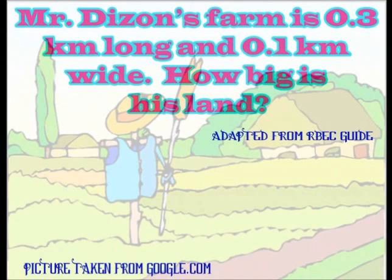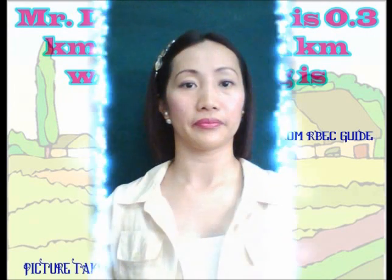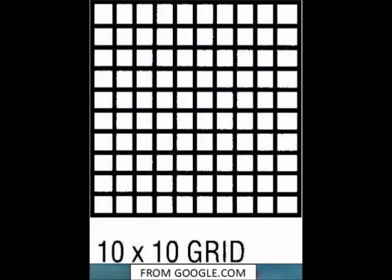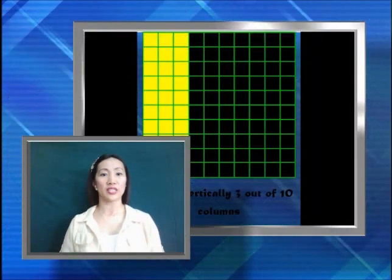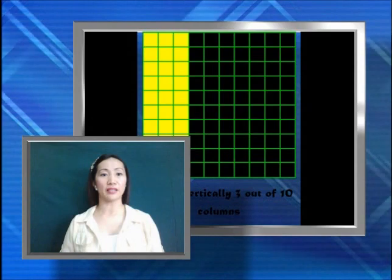Mr. Decent's farm is three-tenths kilometer long and one-tenth kilometer wide. How big is his land? To solve the problem, we need to multiply three-tenths kilometer by one-tenth kilometer. We have to make a 10 by 10 grid first. Three-tenths is the same as three of ten columns, so we shade three of ten columns.